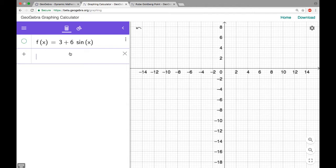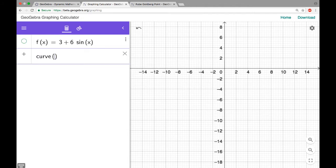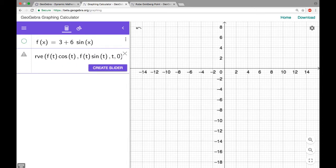And now what I'm going to do is I'm going to use the curve command and the notion that x is r times cosine theta and y is r times sine theta and let theta go from zero to 2π to get our polar curve going. So it's going to be f(t)cos(t), f(t)sin(t).